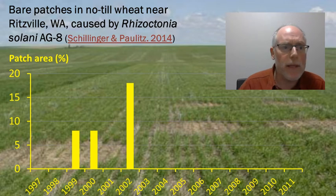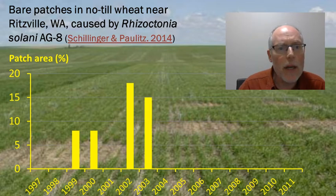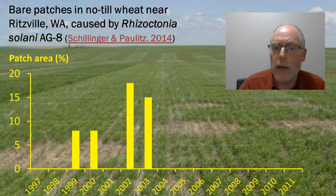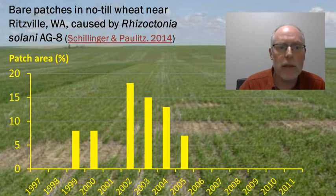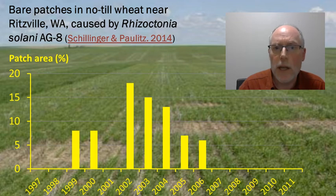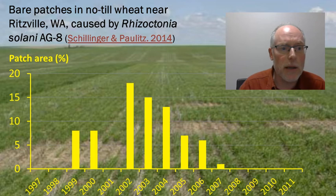In 2003, something interesting started to happen. The area affected by bare patches started to shrink. They covered 15% of the wheat area that year when the picture was taken, 13% the next, then dropped down to 7%, 6%, and just 1% in 2007. By 2008, they were gone entirely, and they haven't come back.